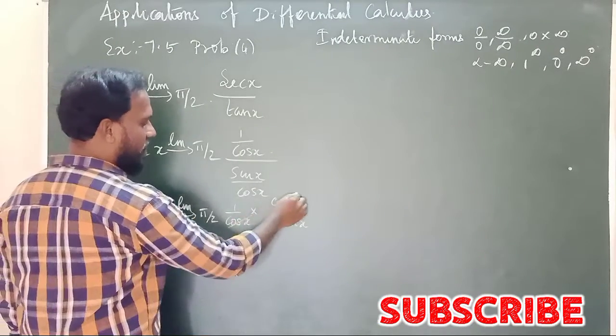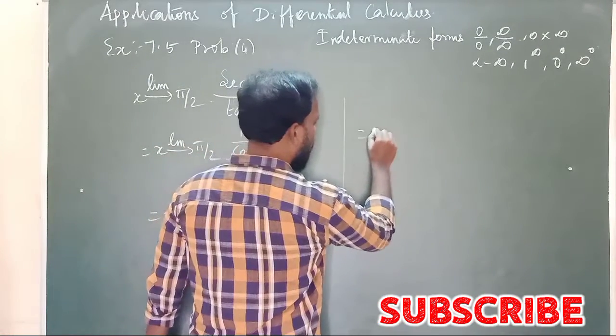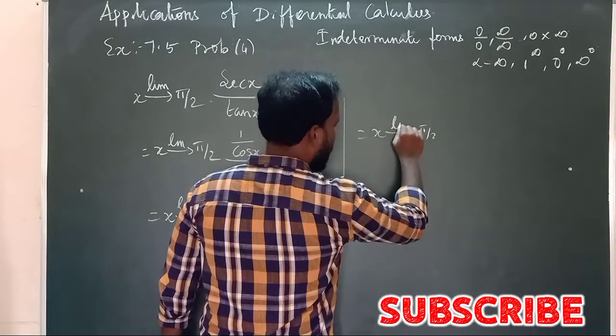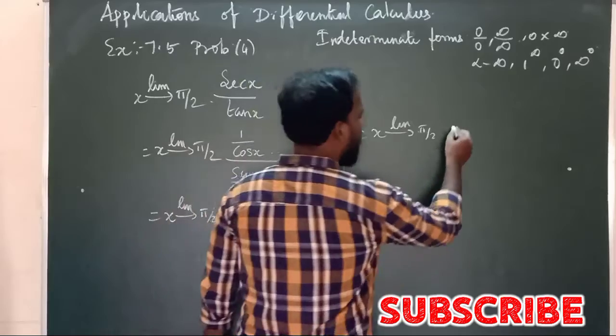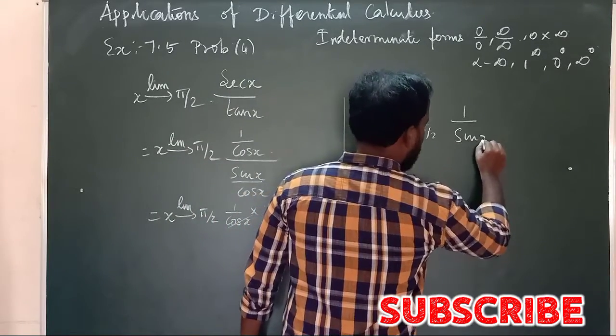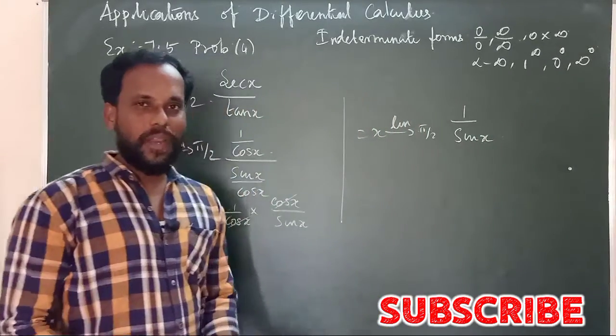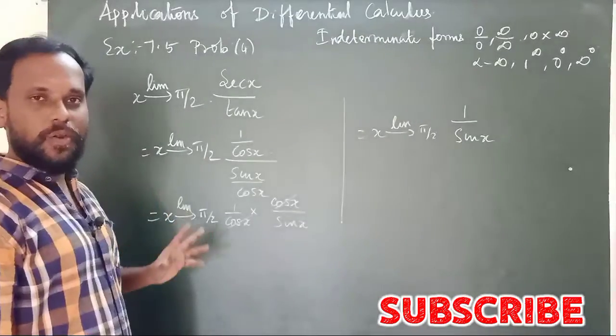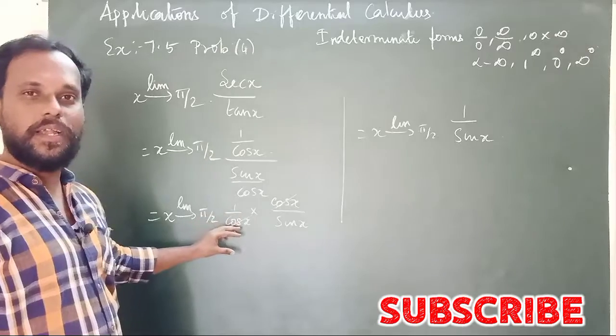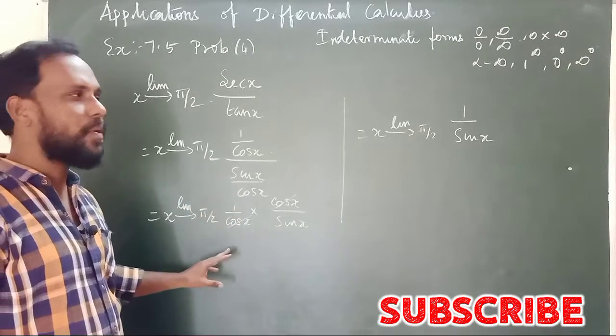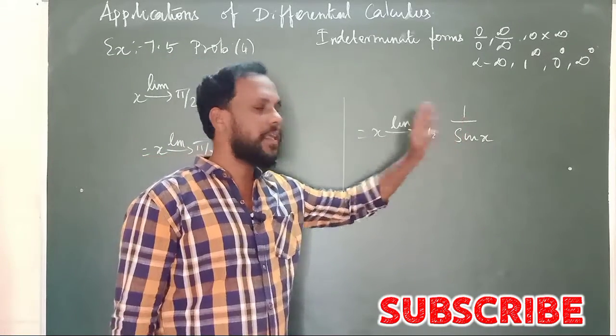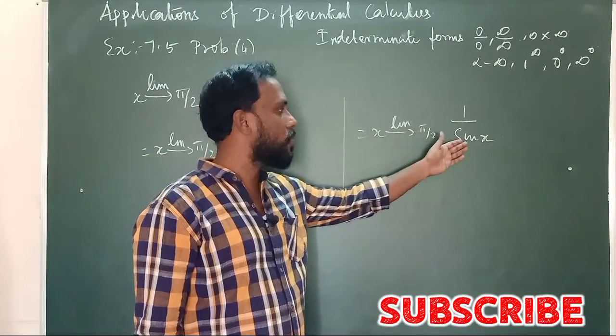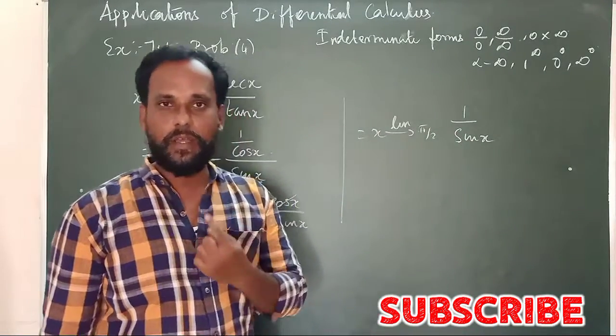Therefore, x tends to π/2, 1 by sin x. When you apply the limit as x tends to π/2, you find that all of this equals 1.